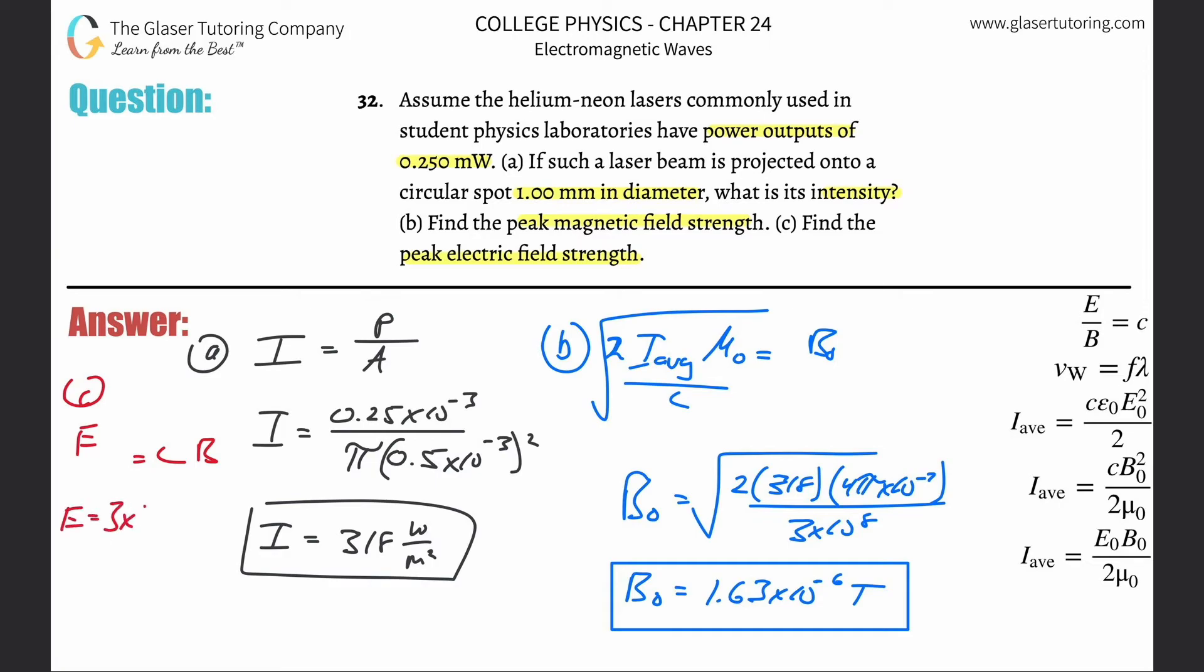So this is going to be three times 10 to the eight, multiplied by our magnetic field strength that we just found, 1.63 times 10 to the minus six. And what you should do is you should do all the substitutions and kind of prove to yourself why everything just cancels out. That would be a good thing to practice.